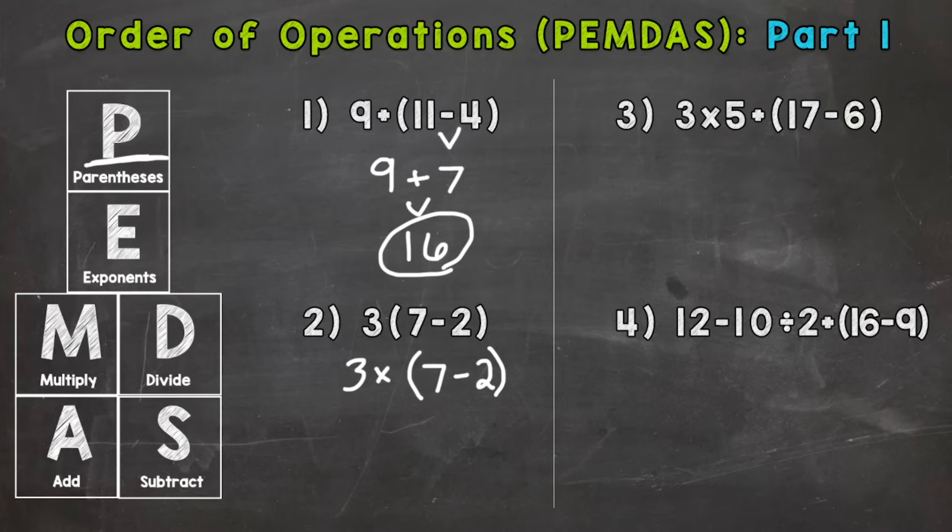Alright so let's go through our steps. Step one parentheses, do we have any in this problem? Yes, so that's what we need to do first. Seven minus two is five and then let's bring down everything we didn't use: the multiply and the three. So we end with three times five which is fifteen.